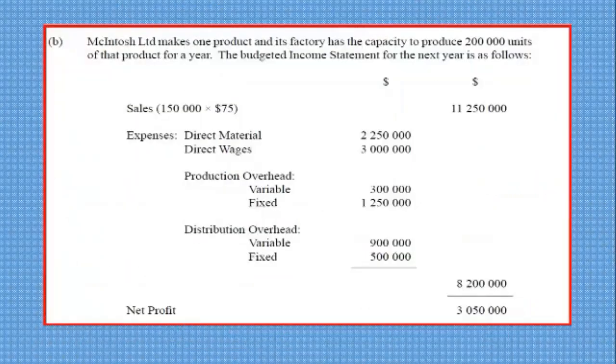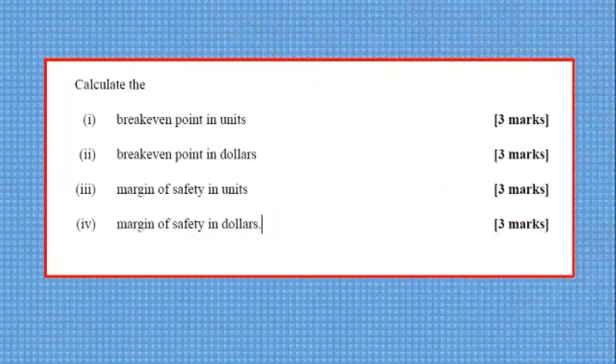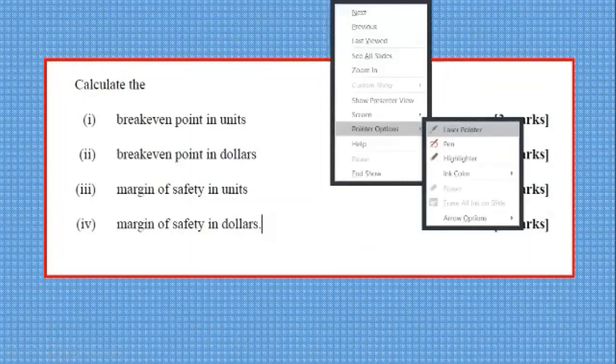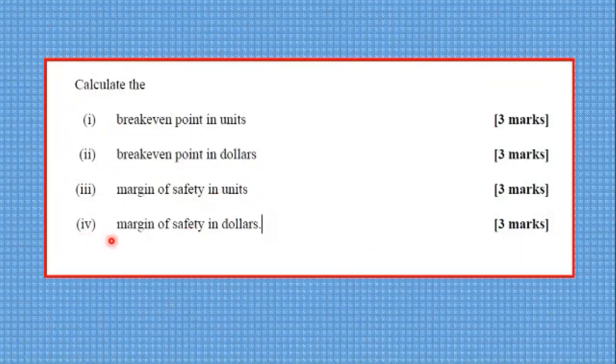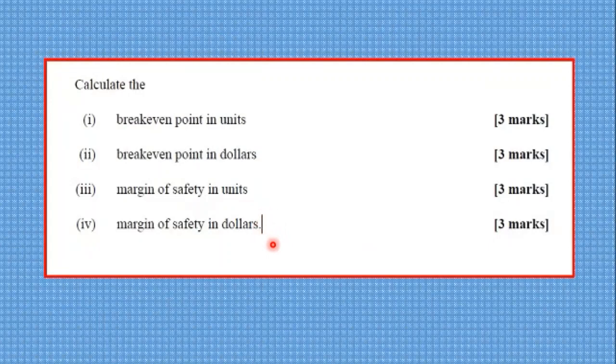Part B. For part B, we'd look at the questions first. All right, they ask us to calculate the breakeven point in units, then the breakeven point in dollars, the margin of safety in units, and the margin of safety in dollars. We've got three marks for each one of those.